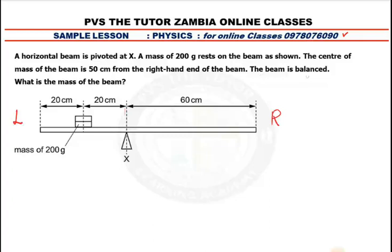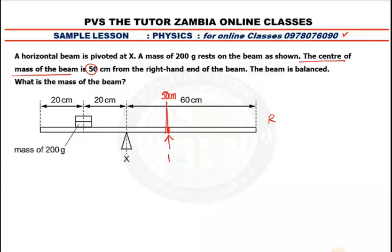The beam is balanced. They've told us something important: the center of mass is 50 centimeters from the right. So we measure 50 — let's say our 50 is somewhere here. So this point here is 50 centimeters, and this is where the mass of this beam is concentrated.